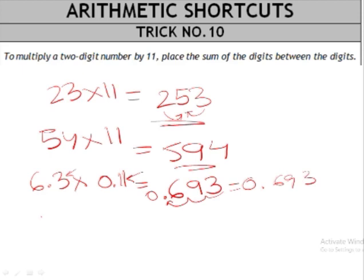The only thing to be noted is if the numbers add up to more than one digit. For example, if you have to multiply 49 by 11, 4 plus 9 is 13. In the middle we have just space for one digit.